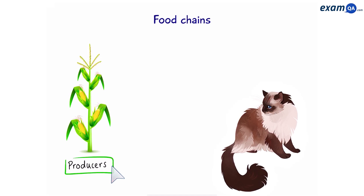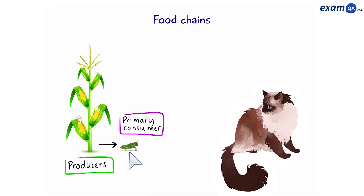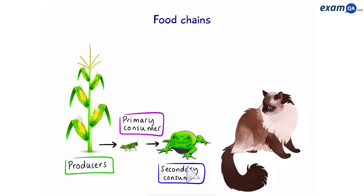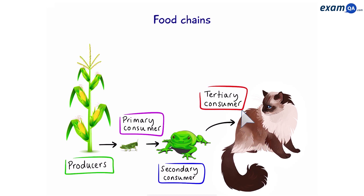From here, the energy gets transferred to insects, such as the grasshopper. This is a primary consumer. Then, from the grasshopper, it goes into the next organism — for example, a frog. This is a secondary consumer. And finally, the energy from the sunlight that went to the corn, then the grasshopper, then the frog, makes its way to the cat. The cat being the tertiary consumer.